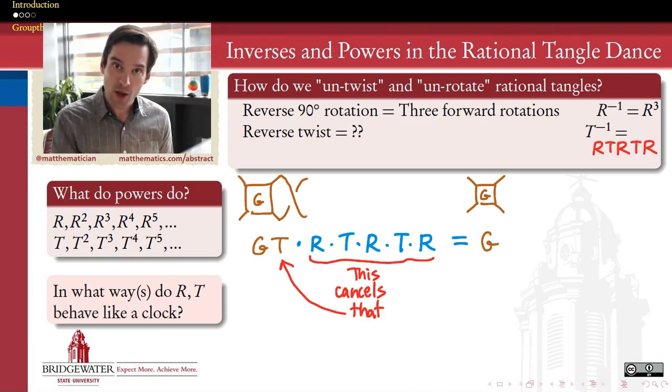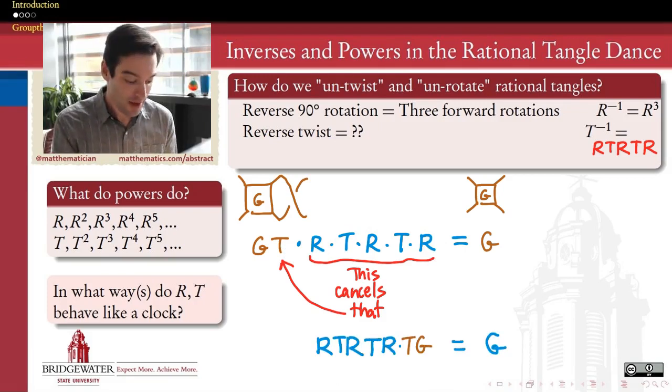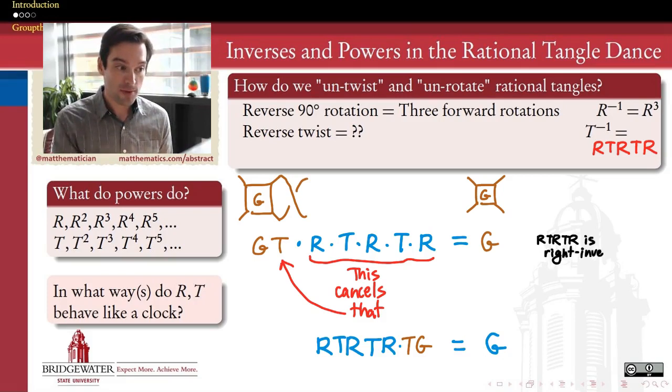But it turns out that the same also works if I do all of this blue stuff first, RTRTR, and then I apply a twist, that it also cancels that twist when I operate on the left.